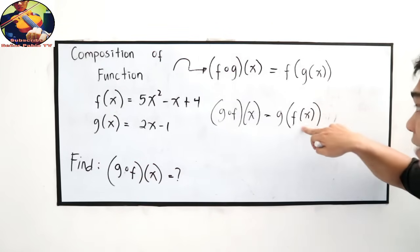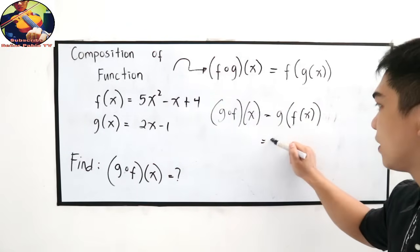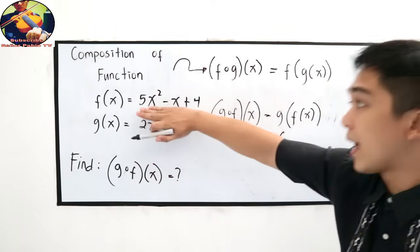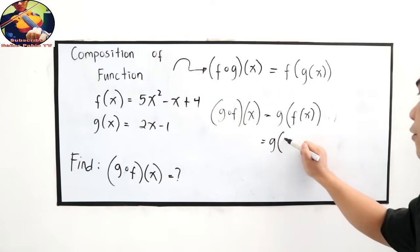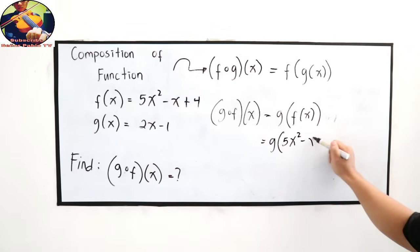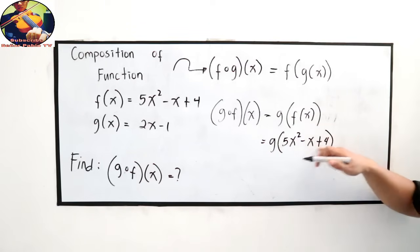So f of x, let's get its value. Let's substitute it here. So we have g of, our f of x is 5x squared minus x plus 4. Now, g of 5x squared minus x plus 4.